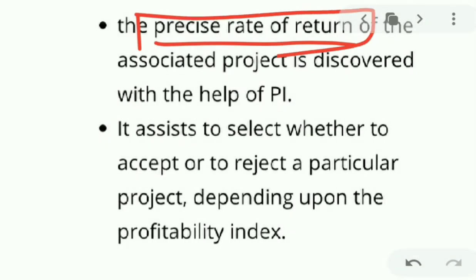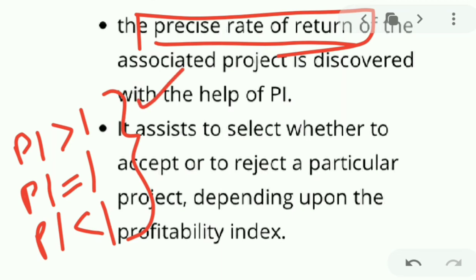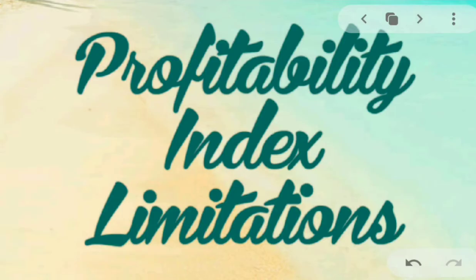The precise rate of return of the associated project is discovered. It assists in deciding whether to accept or reject a project. By analyzing PI: when PI is greater than one we accept, when PI is equal to one it is neutral, and when PI is less than one we reject the project.